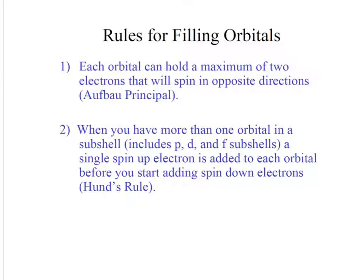Rules for filling orbitals. Each orbital can hold a maximum of 2. This is the Aufbau principle. Two electrons will spin in opposite directions. The p subshell has 3 orbitals. The d subshell has 5 orbitals. The f shell has 7 orbitals. When you have more than one orbital in a subshell, the p, d, and f, a single spin up electron is added to the orbital before you start. This is Hund's rule. They have opposite spins.